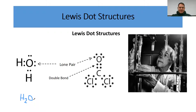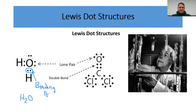The first structure we're looking at is water. Each dot represents a valence electron. Dots that are paired between two atoms represent a covalent bond — we call this a bonding pair. All bonding pairs are covalent bonds, and we always use two electrons to represent a covalent bond. For water, we have two bonding pairs.